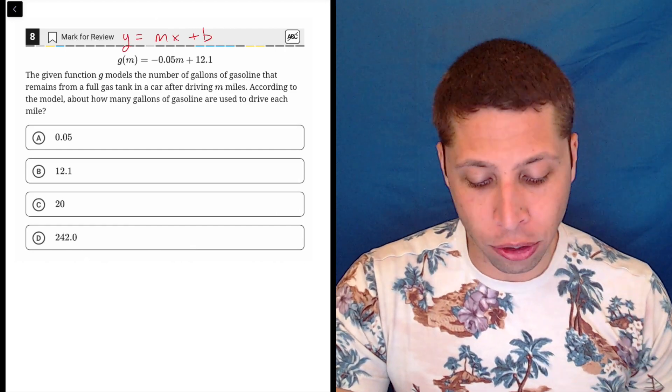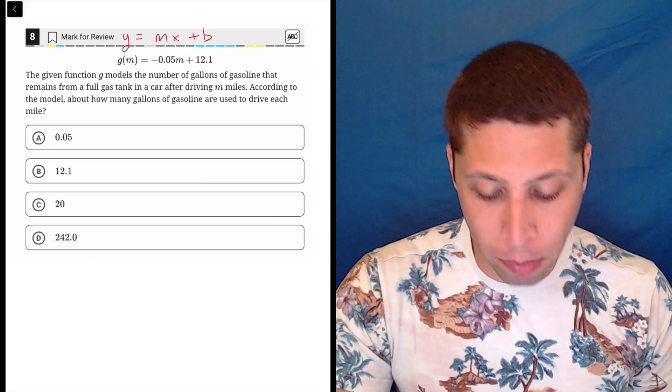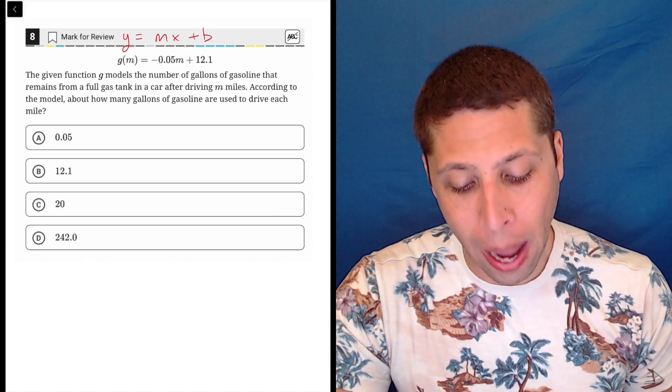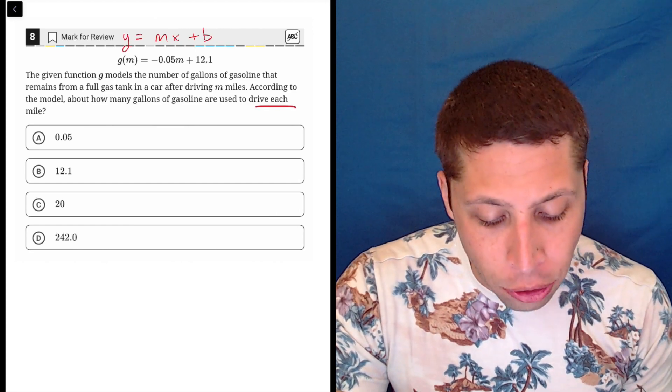Now we get the story, right? The given function g minus the number of gallons of gasoline that remain from a full gas tank in a car after driving n miles. According to the model, about how many gallons of gasoline are used for each mile.